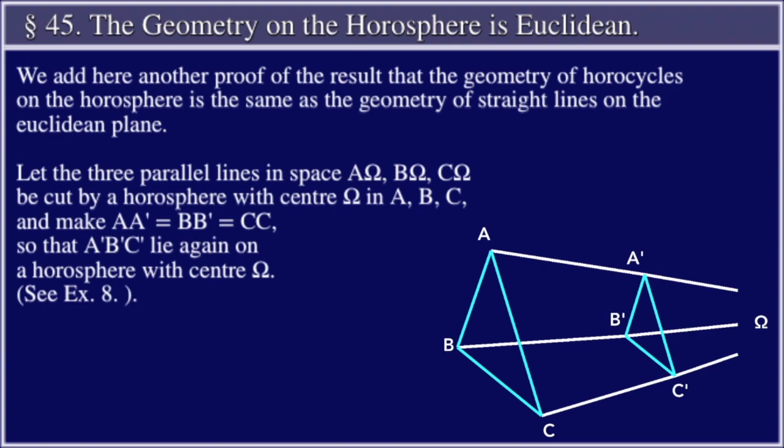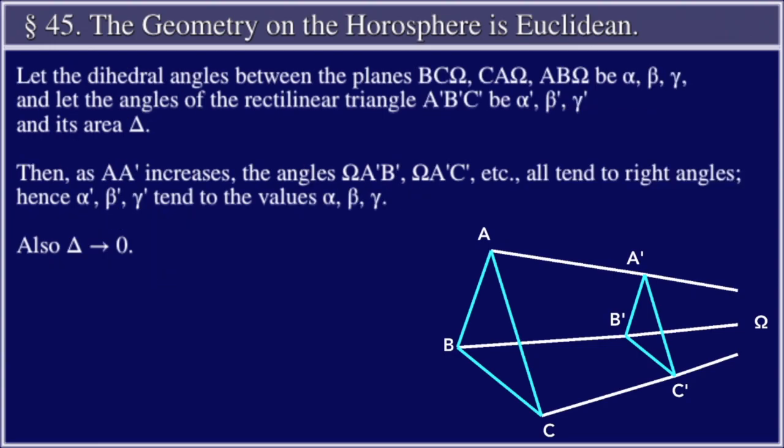Let the three parallel lines in space AΩ, BΩ, CΩ be cut by a horosphere with center Ω in A, B, and C, and make AA' equal to BB' equal to CC', so that A'B'C' lie again on a horosphere with center Ω. See Exercise 8.